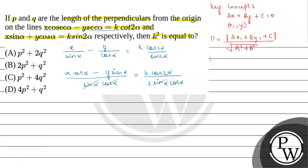Sin alpha and cos alpha cancel on both sides, giving us X cos alpha minus Y sin alpha minus K by 2 cos 2 alpha equals 0. From here we can say A equals cos alpha, B equals minus sin alpha, and C equals minus K by 2 cos 2 alpha.